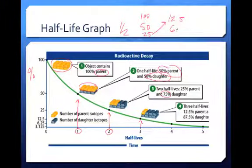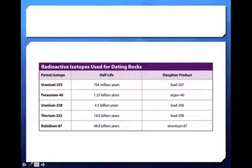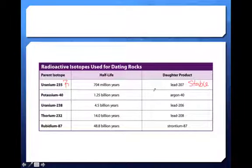Beyond that you get into pretty small values — 6.25%, then 3.125%. We'll normally only be dealing with one through five half-lives in class. This image just shows some real examples of useful isotopes. On the left-hand side you have the parent isotope — the radioactive elements — such as uranium-235, potassium-40, uranium-238. In the middle, you have the half-life: how long it takes for half of the material to decay. Then the daughter product — what's left over, which is stable. You don't have to memorize this; just understand what it is and that these are useful isotopes for dating rocks.